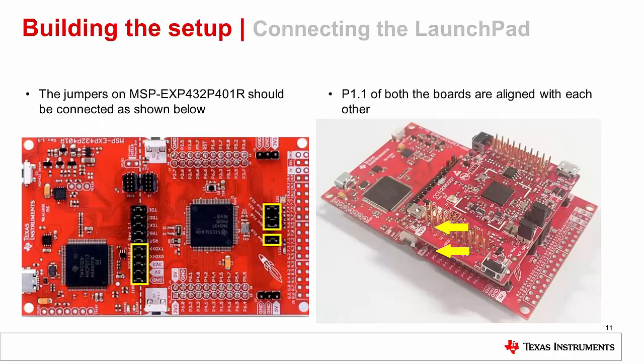Back to the hardware: connect the MSP432 launchpad and the CC3120 booster pack together. Please make sure the jumper settings on the MSP432 launchpad are configured as shown in the left picture. Now align the white triangles as before with the CC31XX emulation board, and then connect the micro USB cable on the MSP432 launchpad.